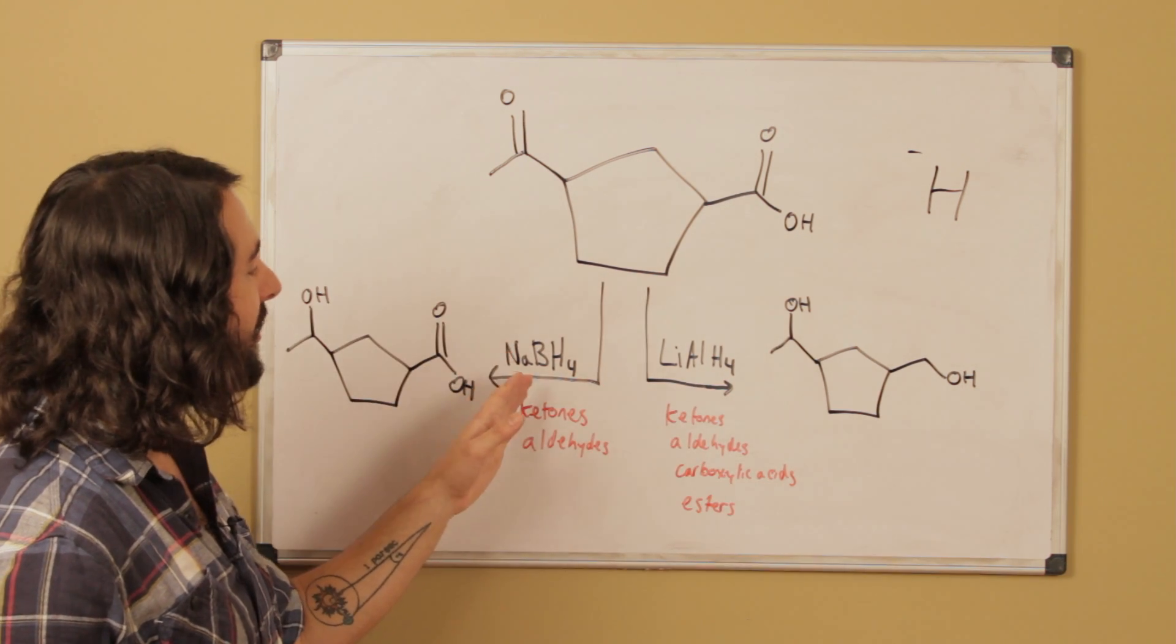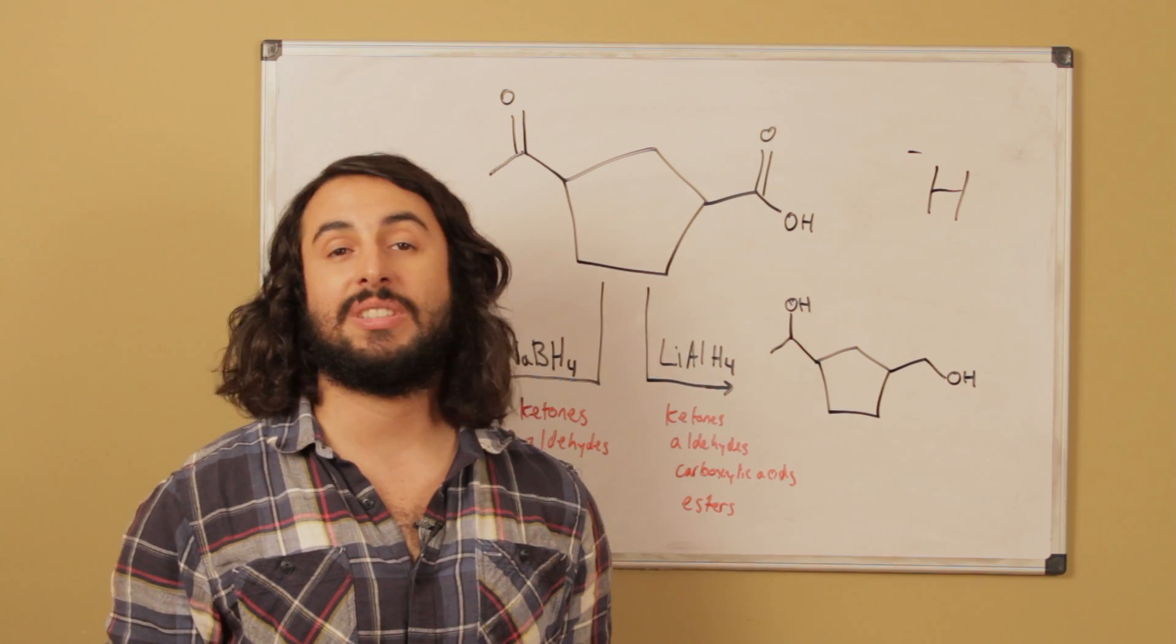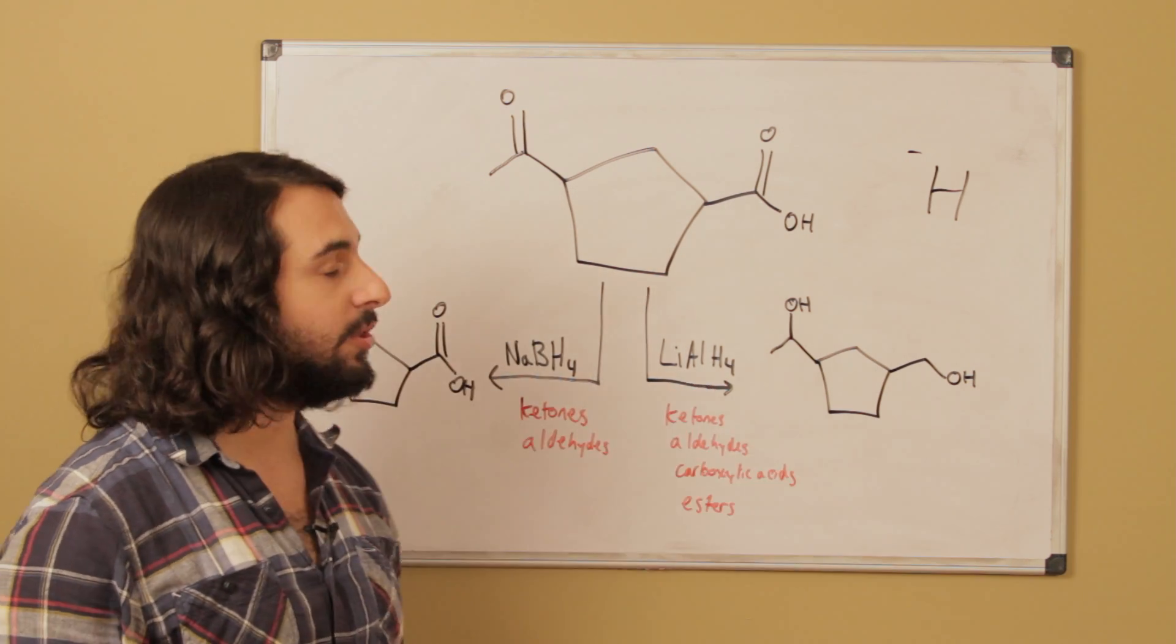So the key here is noticing the difference in reducing strength of these two reducing agents and using that information to draw the two correct products.